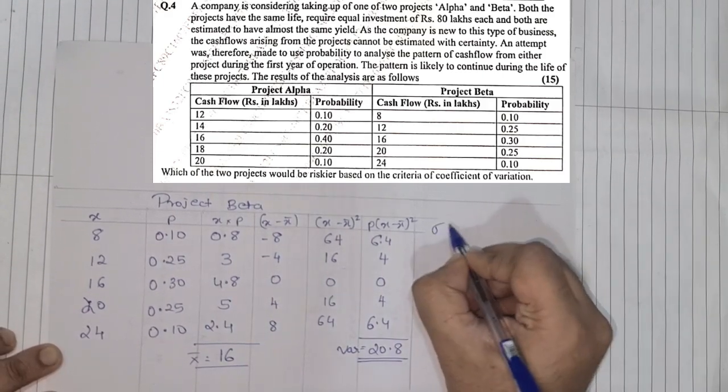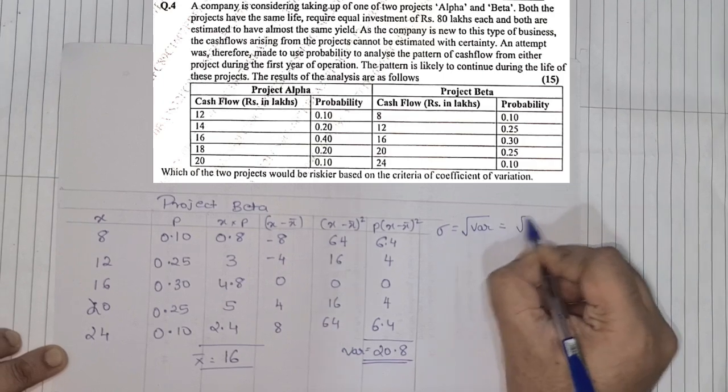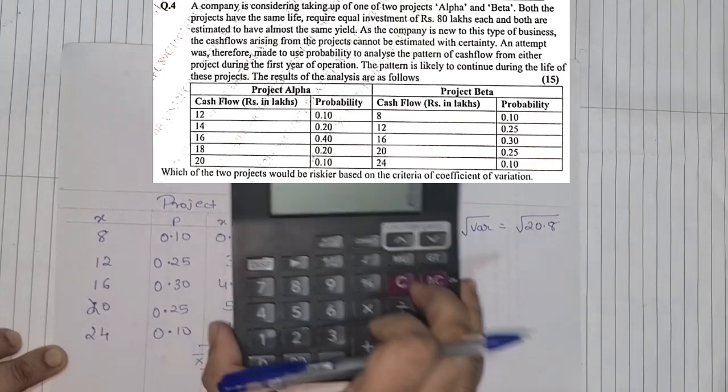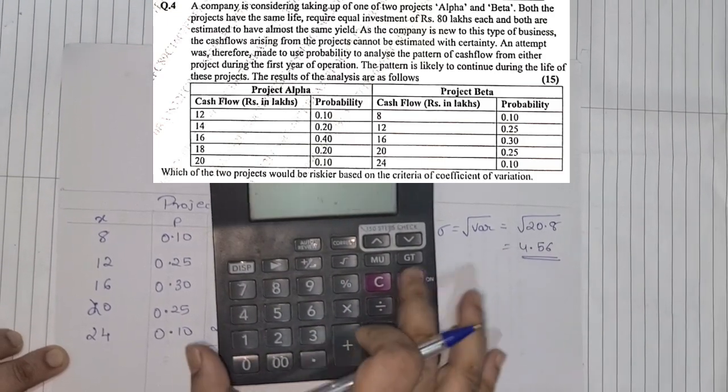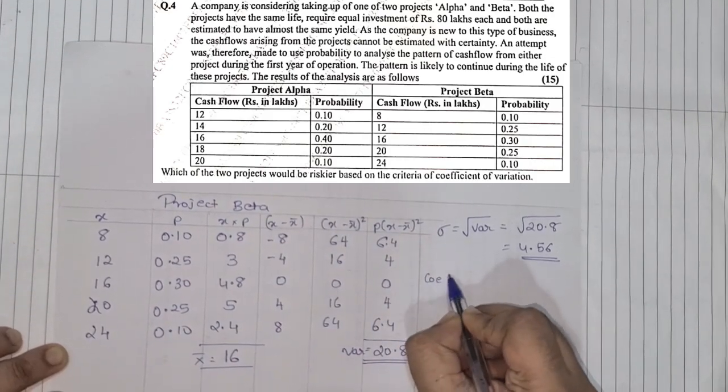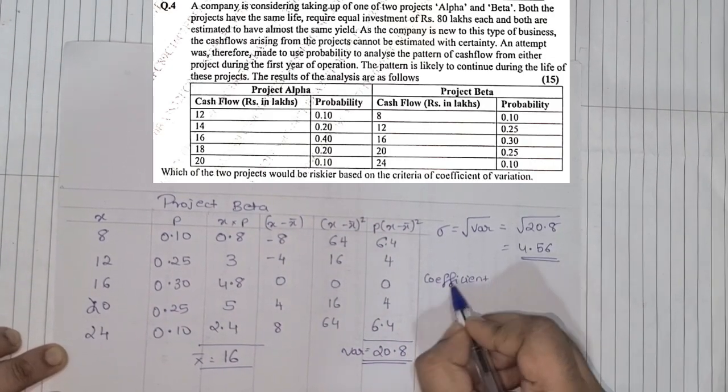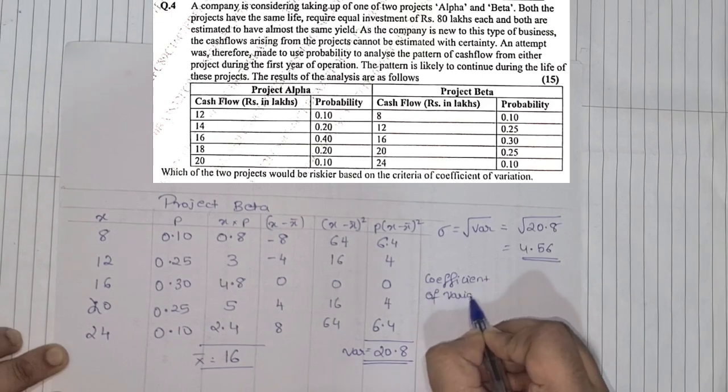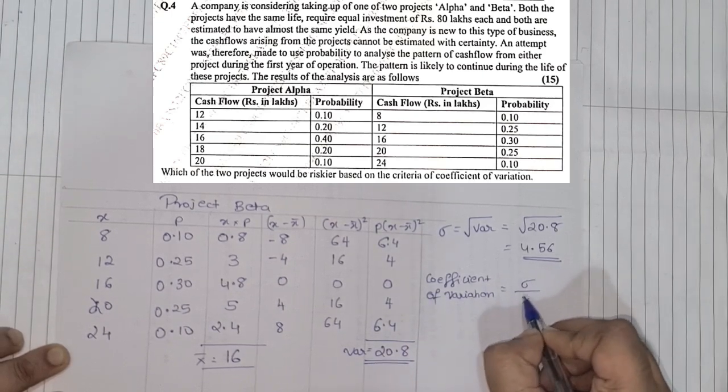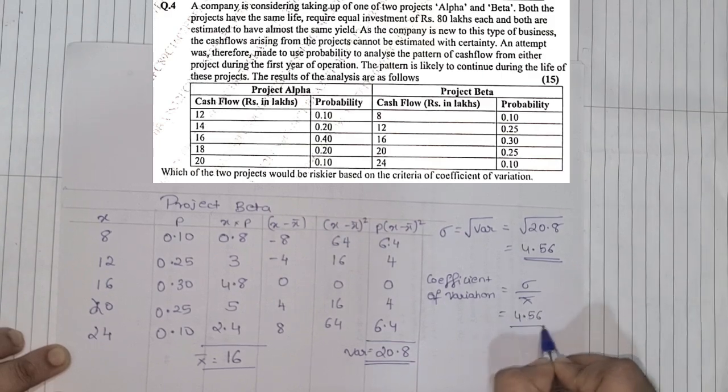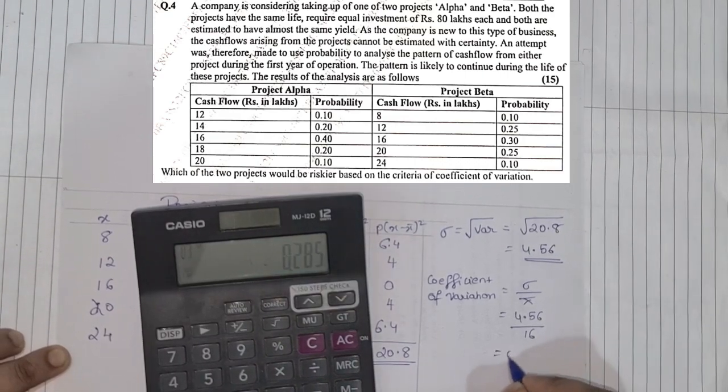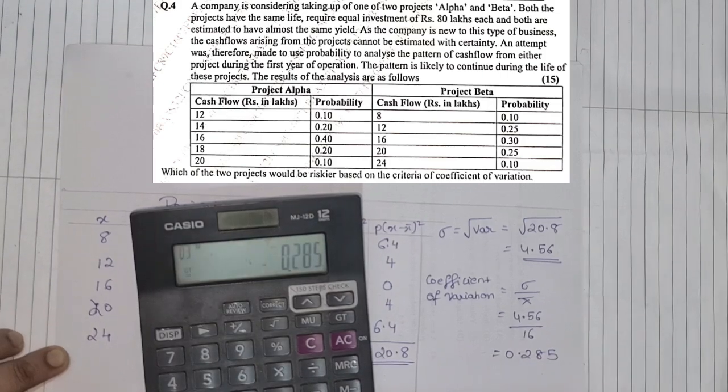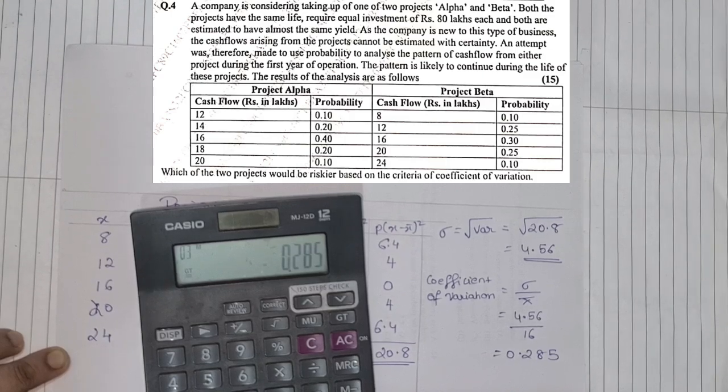Once we got that, standard deviation is the root of variance, which is the root of 20.8. So on the calculator, 20.8, the square root is 4.56. So now we find coefficient of variation. Coefficient of variation, the formula is standard deviation upon X bar. Standard deviation of 4.56 upon 16. We divide 4.56 divided by 16, we get the value as 0.285.